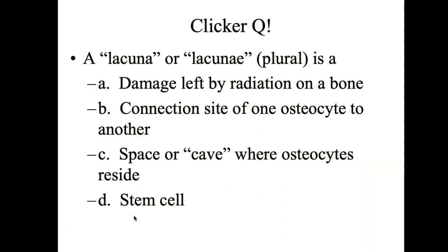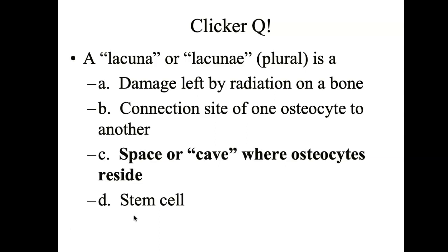Let's try another. Lacuna, or lacunae in plural, is a space where the osteocytes reside. Remember that the matrix is very hardened, and if you're a living thing, you're essentially living in an environment that's rigid. So you need to have a little cave where you can live inside this rigid environment. That little cave is called a lacuna, or lacunae when you have more than one.